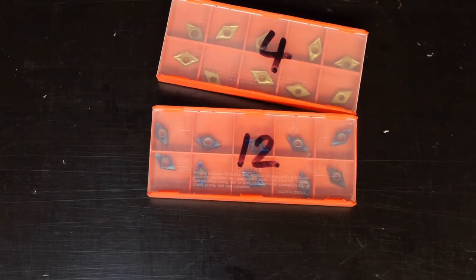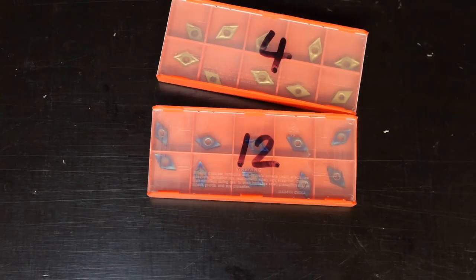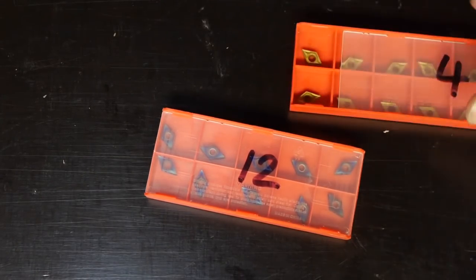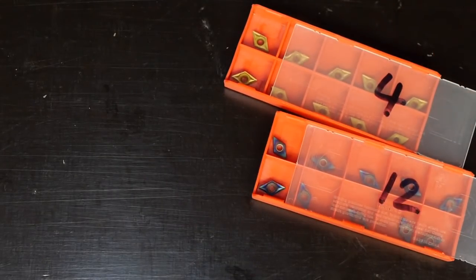As you can see, both of these come in an unmarked red box and both are according to the seller's website made from the same type of carbide, something called YBC 251, and the shape of the chip breaker on these inserts also looks exactly the same.